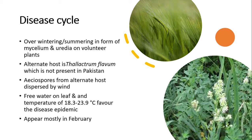Mycelia on volunteer plants survive over-summering. Urediniospores are dispersed by wind and water. The temperature of 18 to 23 degrees centigrade creates epidemic conditions. This temperature is prevalent in February in Pakistan and India, making this disease very important in those regions.